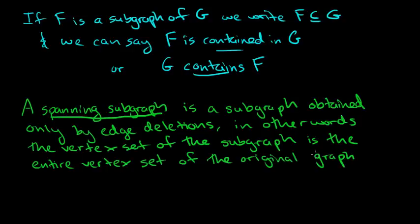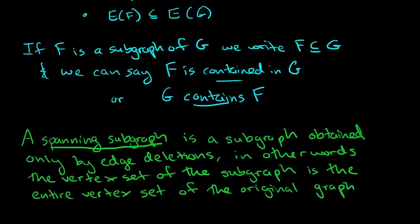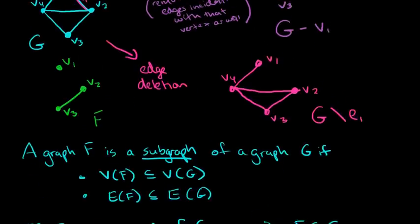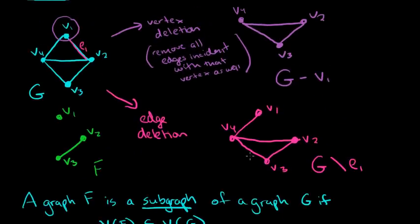We saw that example where we had a spanning subgraph. The pink subgraph was spanning because its vertex set — V1, V2, V3 — is the entire vertex set of the original graph.